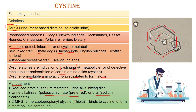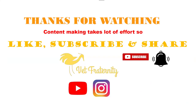Additionally, 2-MPG — 2-mercaptopropionyl glycine — is used in treatment because it binds to cysteine to form a more soluble compound, which can then be easily excreted in the urine. That was all about cysteine crystals; I hope you have understood the lecture.